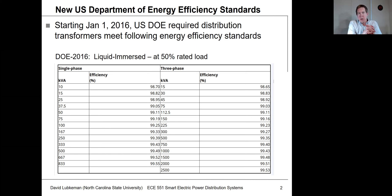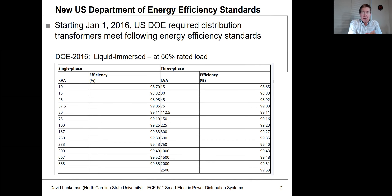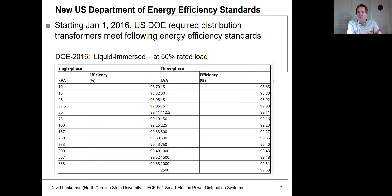These are transformers where you have a tank, and the transformer sits at the bottom covered with oil. These standards were in effect at the beginning of 2016. They specify a minimum efficiency at 50% rated load, because this is typically where transformers would be operating most of the time.